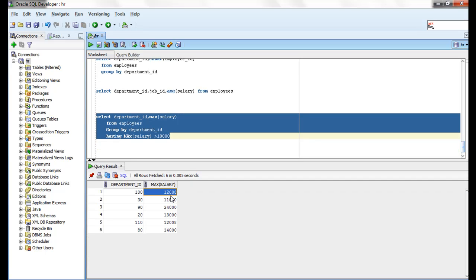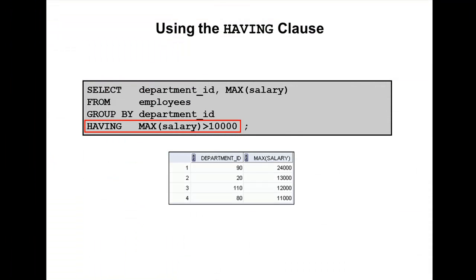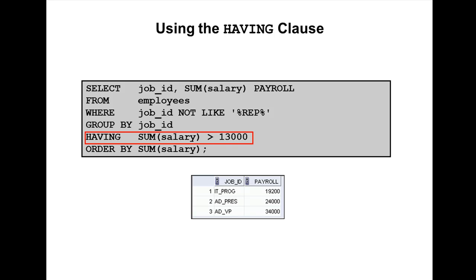These are the department IDs whose maximum salary is greater than 10,000. In this next slide, the example displays the job ID and the total monthly salary for each group with a total payroll exceeding 13,000. This example excludes the sales representatives using WHERE job ID NOT LIKE 'representative', and sorts the list by total monthly salary.